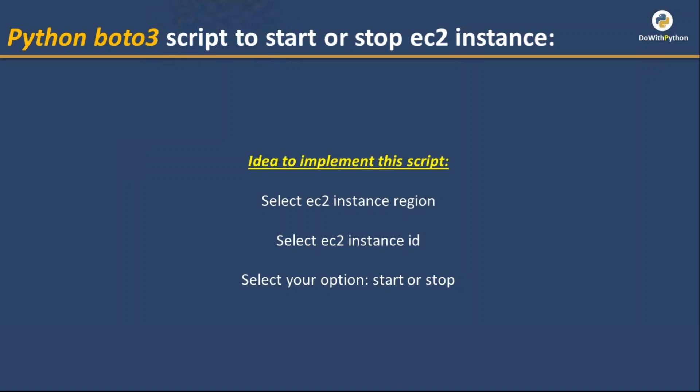In case the instance is already stopped and you provide the stop option, the script should not try to stop it again. It should give a message that it is already in a stopped state. If the instance is in running state and you give the stop option, the script has to wait until it is stopped, then tell you that it is now in the stopped state.